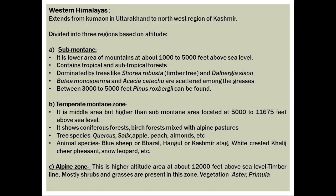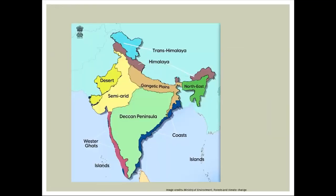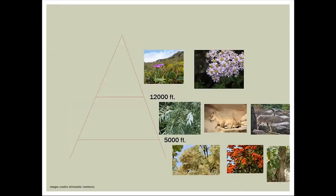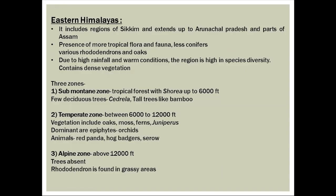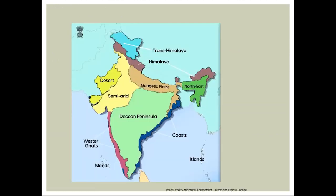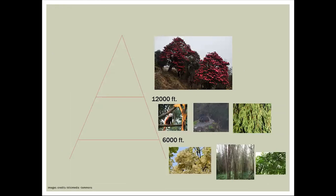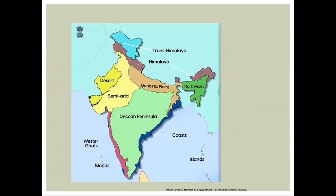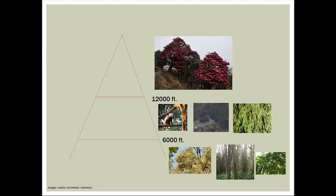Then the Himalayan zone, comprising western and eastern Himalayas, further classified by height into sub-mountain, temperate mountain, and alpine zones. In the western Himalayas, remember the Angora and blue sheep. Eastern Himalayas includes Arunachal Pradesh and Assam — remember the red panda, serow, rhododendrons with vibrant pink flowers, and bamboo found in this region.